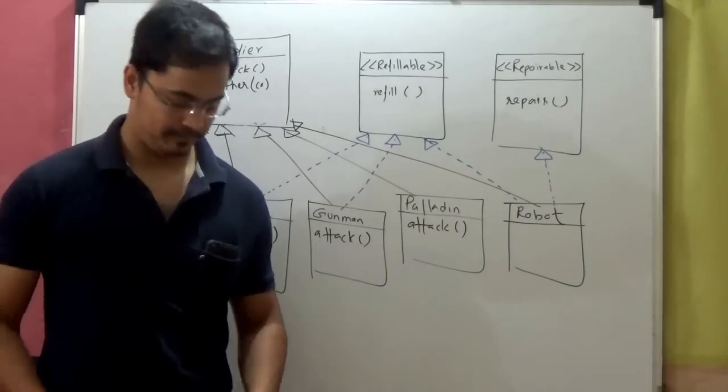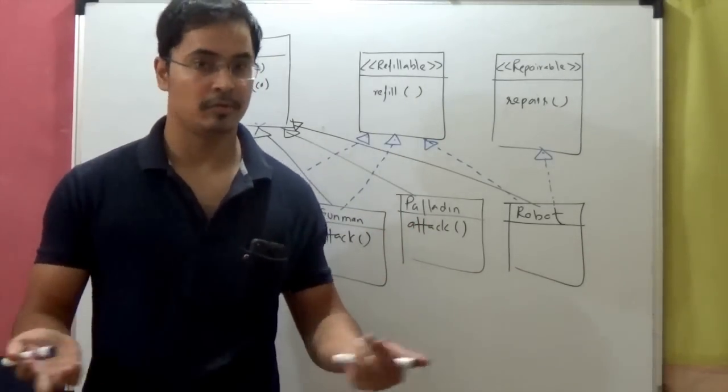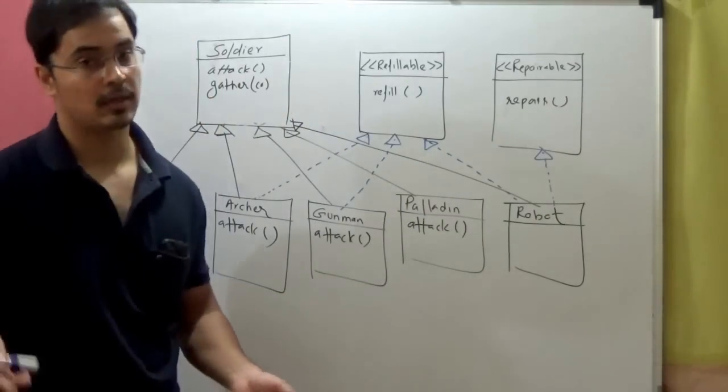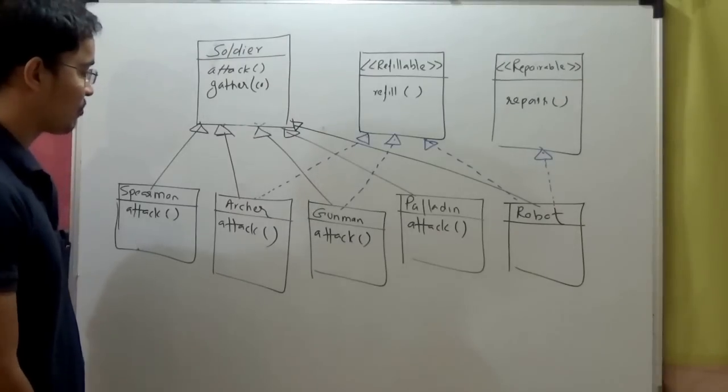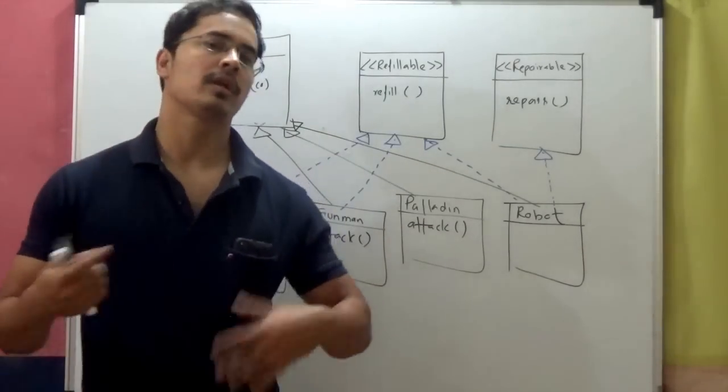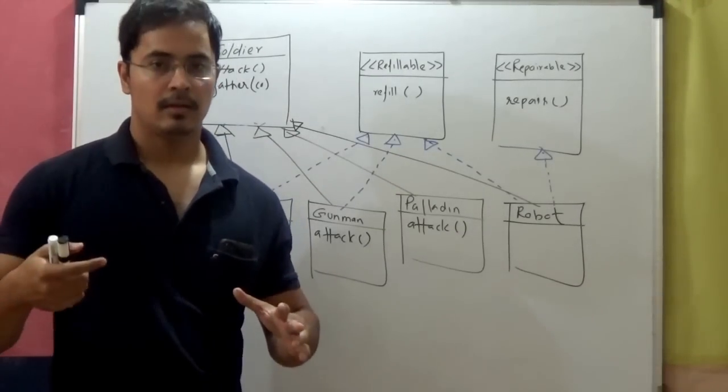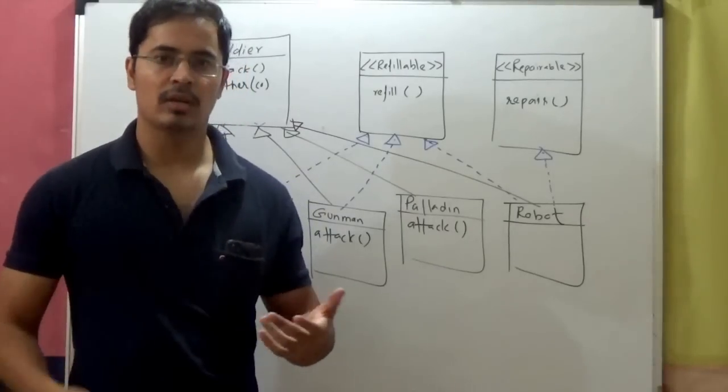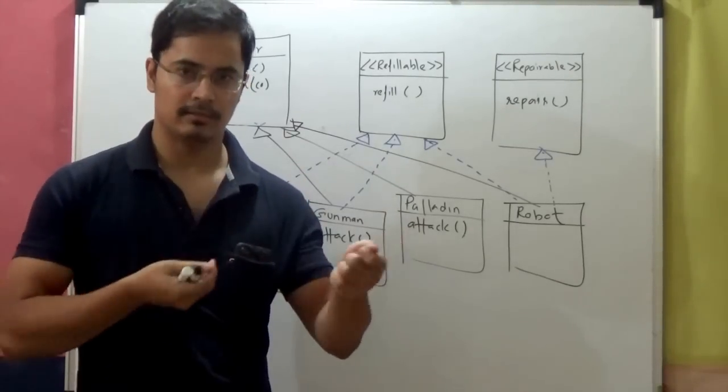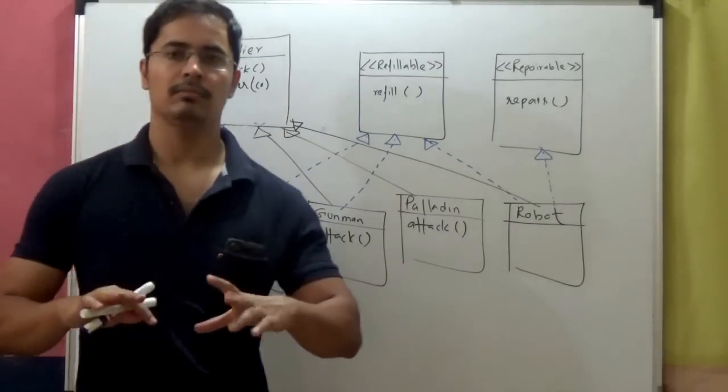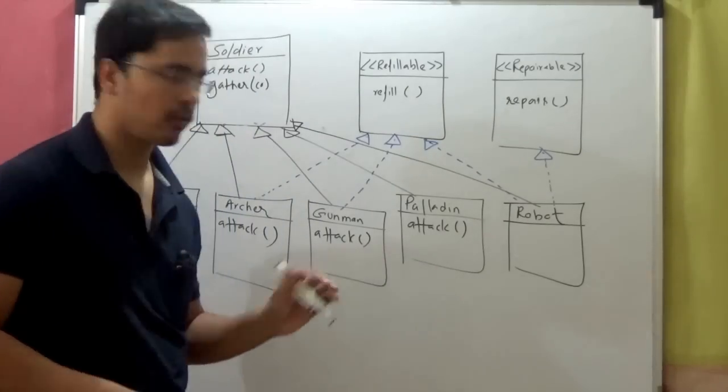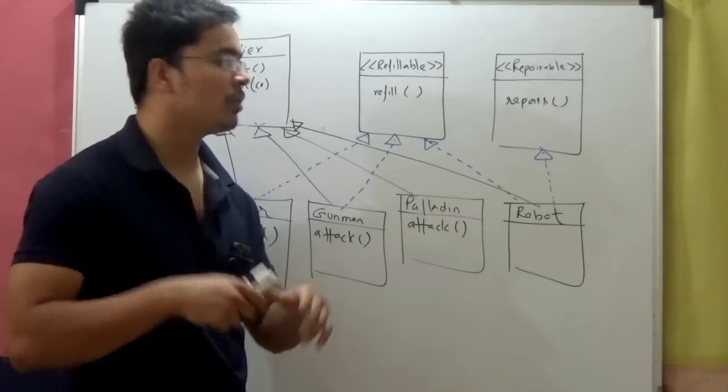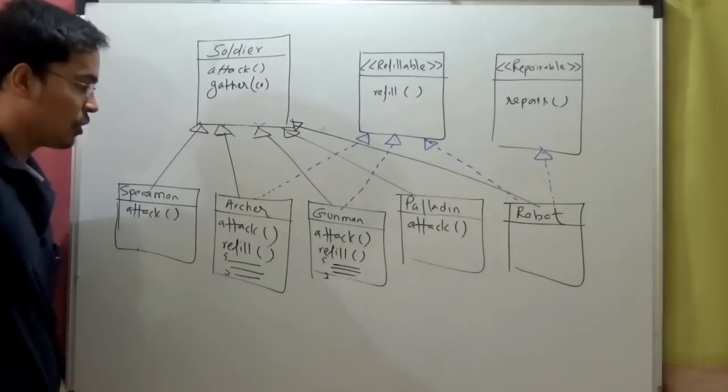But it doesn't end there. Why? Software changes. I told you in that video on Solid Principles, software changes. It keeps on changing. That's the only constant thing about software. Requirements are going to change. So now they are saying that, you know what, this refill behavior, we want to customize it. So archers will refill based on their number of arrows that they are carrying. And gunman, you can't show the bullets, it's very tiny on the screen. So they will refill based on some time, like after a certain period of time of attacking, they will have to refill. So for archer, it will be based on number of arrows, for gunman, it will be based on time. So we want two different behaviors for this refill.